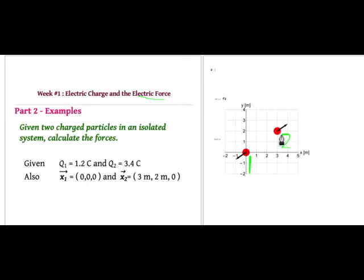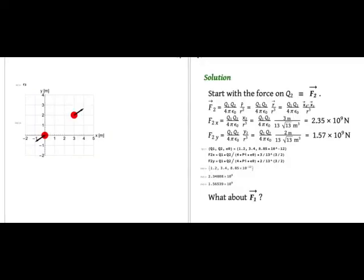Then what's the force on particle 2? Or for that matter, what's the force on particle 1? In this interaction, the two forces are equal but opposite. So let's start with the force on particle 2, exerted by the presence of the other particle. F2 is q1 q2 over 4π ε₀, times r-hat over R squared.